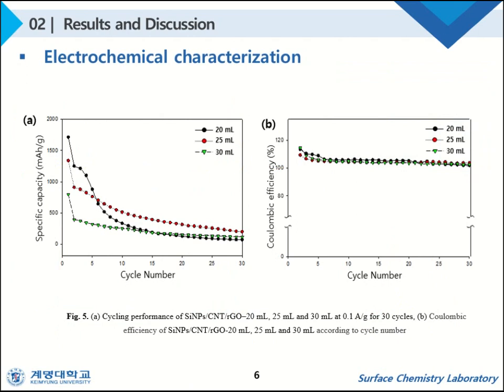Composite films were prepared by varying the volume of dispersion and electrochemical characterization was performed. The initial discharge capacity was high in the order of 20, 25, and 30 mL. The 25 mL composite film maintained a capacity of 198 mAh per gram at the current density of 0.1 A per gram even after 30 cycles. The coulombic efficiency of each electrode showed an efficiency of 90% or more up to 30 cycles.